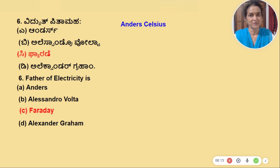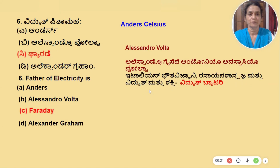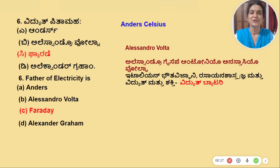For RRB, KS, IAS, etc. — in the next slide, Alessandro Volta. His full name is Alessandro Giuseppe Antonio Anastasio Volta. He's a great scientist.